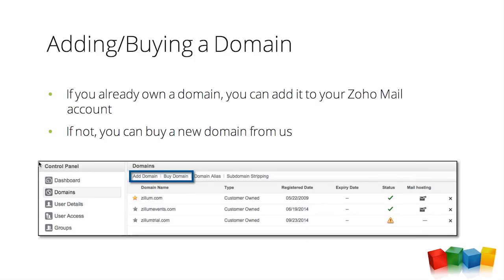Now let's get into the meat and potatoes. Getting a domain is really important for branding and having a solid presence. If you already own a domain, we can add it to Zoho Mail and verify it via your DNS manager. If not, you can always buy a domain — something like bobsautoshop.com.